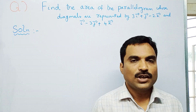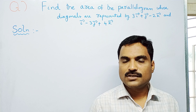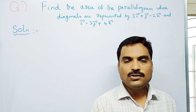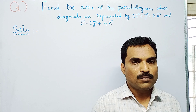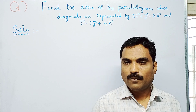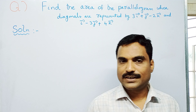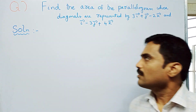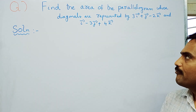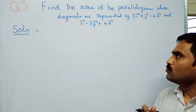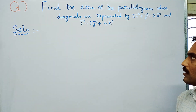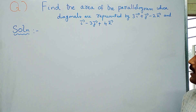Hi, welcome to my channel Yanam Takshasila. In this new video I am going to solve a mathematical problem under the topic 'Product of Vectors.' The problem is: find the area of the parallelogram whose diagonals are represented by 3i̅ + j̅ − 2k̅ and i̅ − 3j̅ + 4k̅.